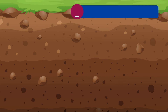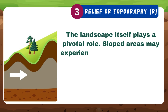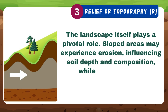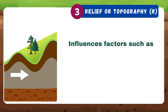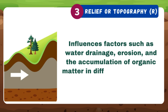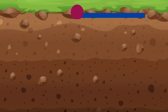Relief, or topography, plays a pivotal role in soil formation. Sloped areas may experience erosion, influencing soil depth and composition, while flat areas may accumulate water and organic material. Topography influences factors such as water drainage, erosion, and the accumulation of organic matter in different parts of the landscape.